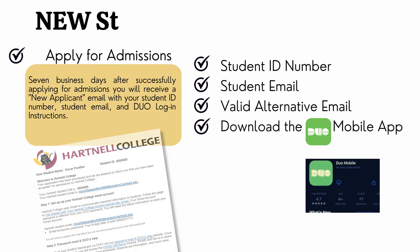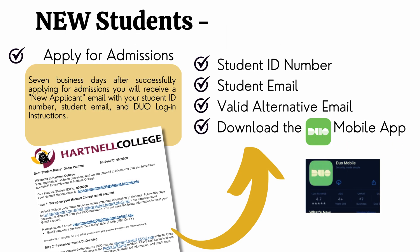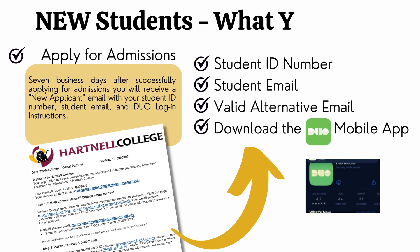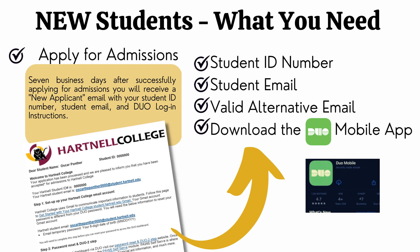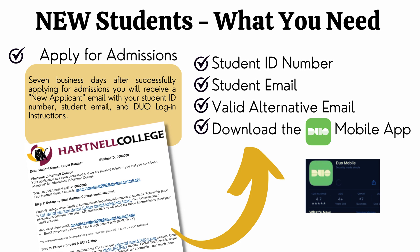If you are a new student, this is what you will need. First, you will need to apply for admissions. Once you successfully apply, you will receive an email with your student ID number, student email, and Duo login instructions. Make sure to also download our Duo mobile app.